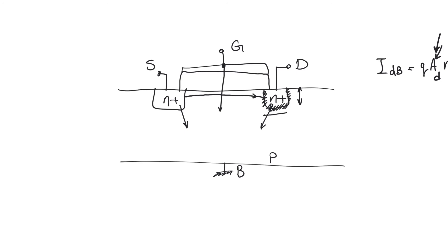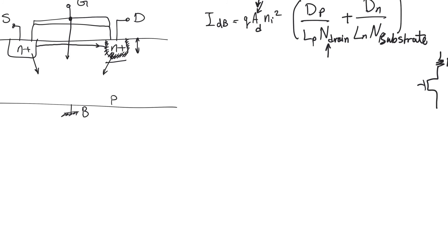The interaction between gate tunneling current and subthreshold conduction current is the main problem: to reduce one, you greatly increase the other. What helps decrease tunneling current will increase subthreshold conduction — that is a big problem which we'll spend a lot of time trying to solve.